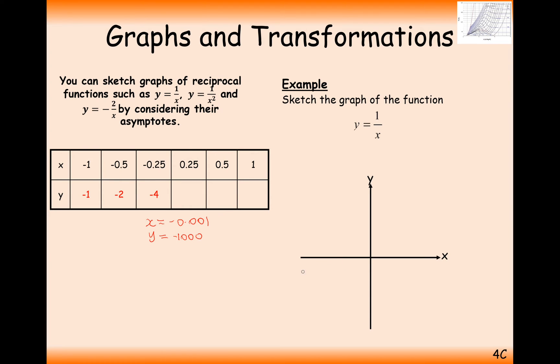So in this case here, we're going to be on the negative part of this graph. When x is very, very, very close to 0 on the negative side, it's going to be minus 1,000. So very, very low on that y axis.